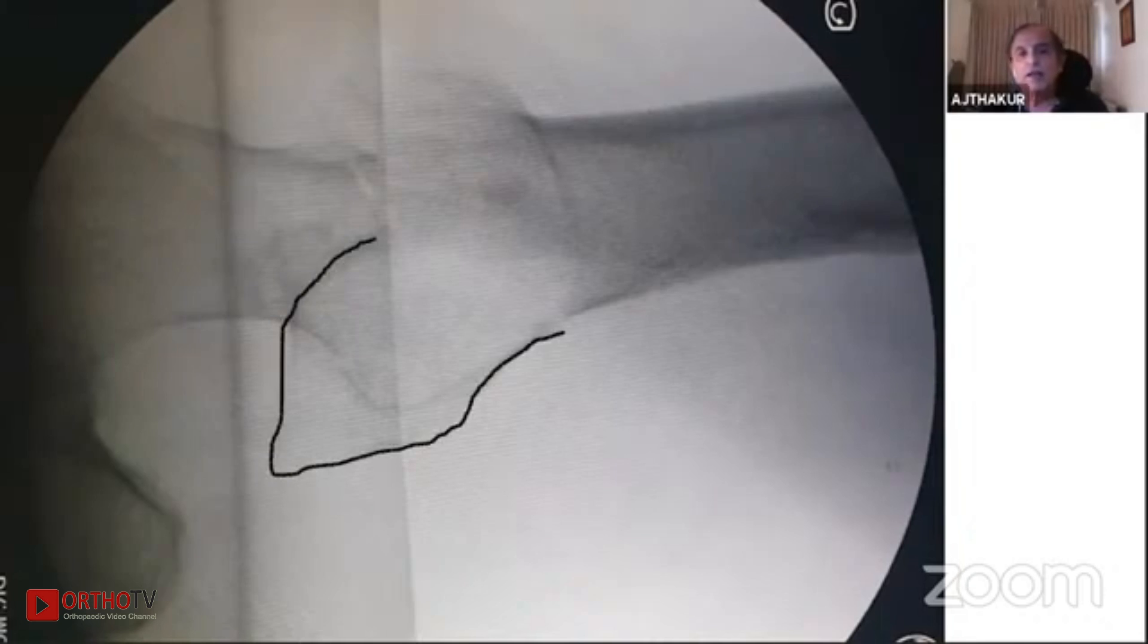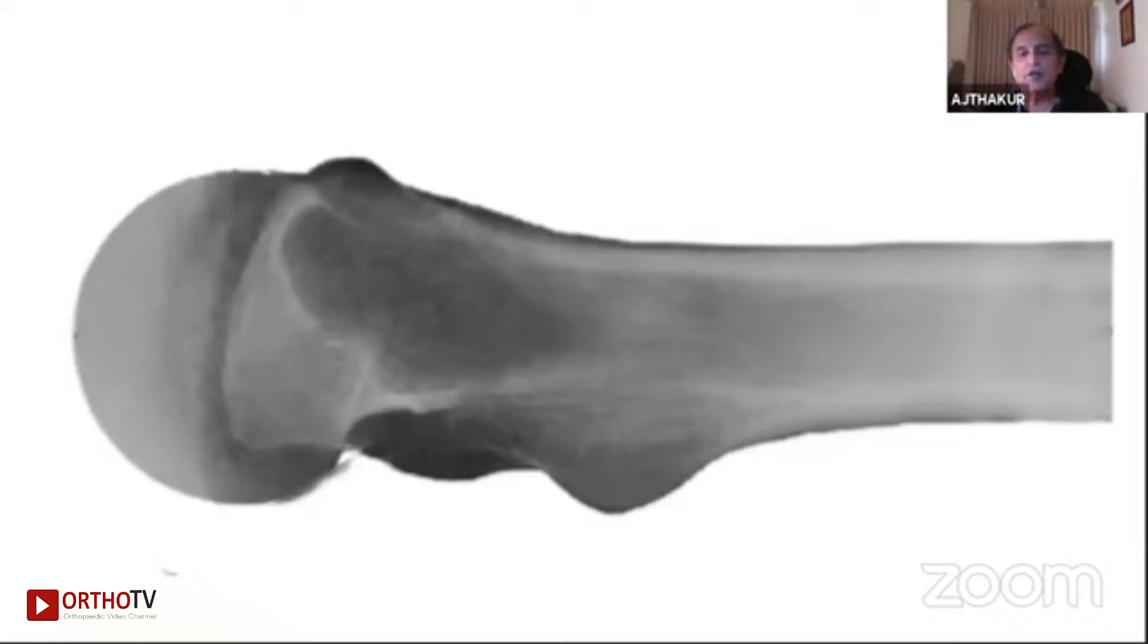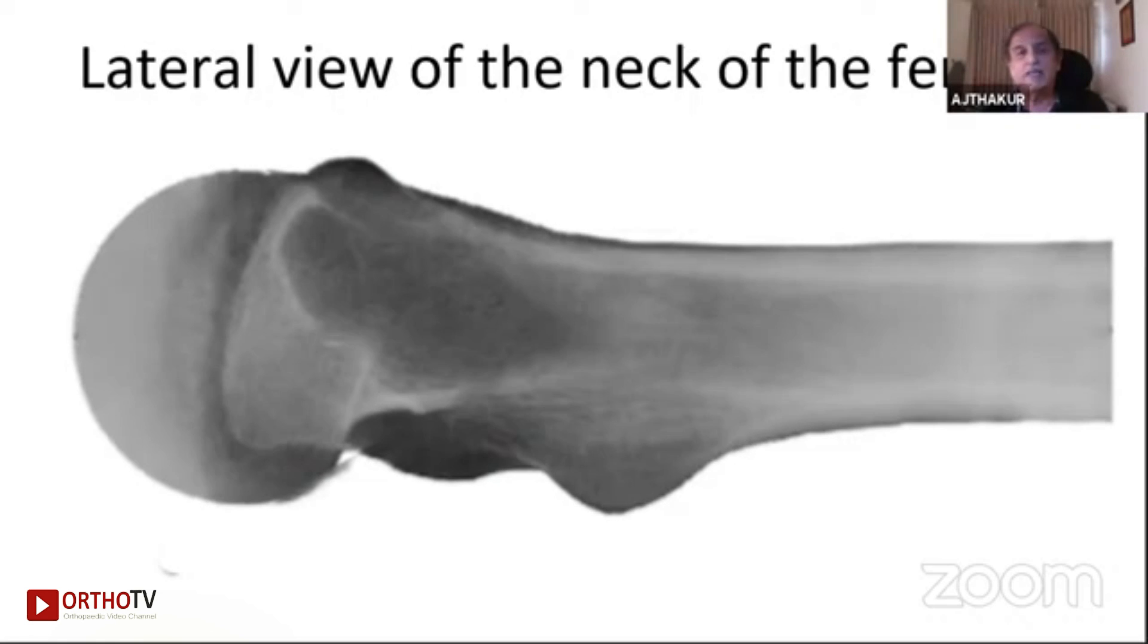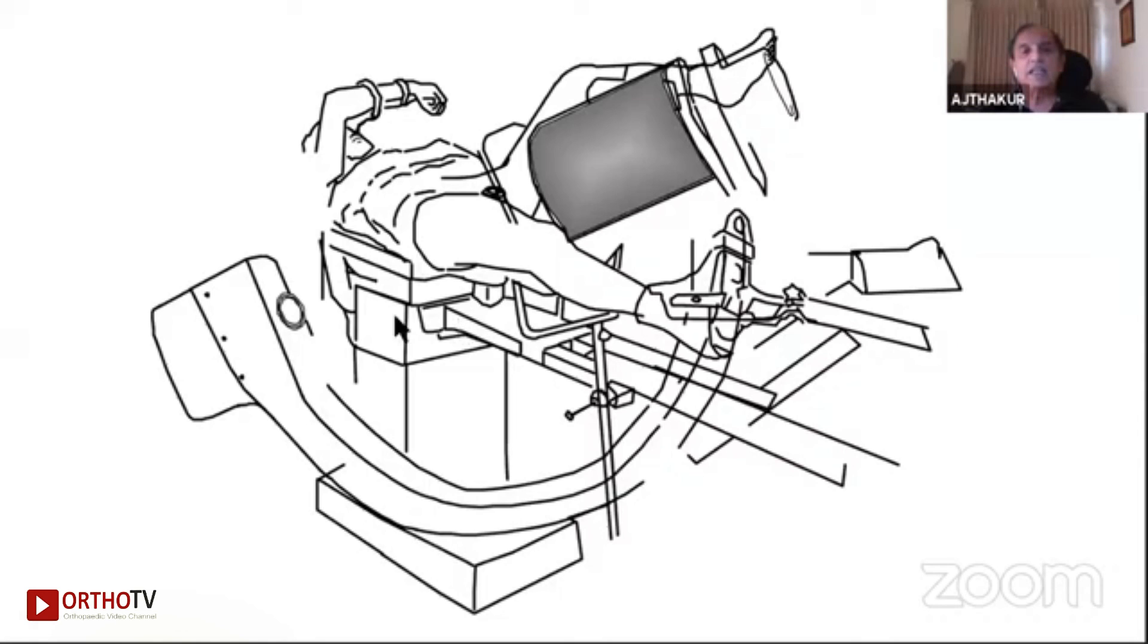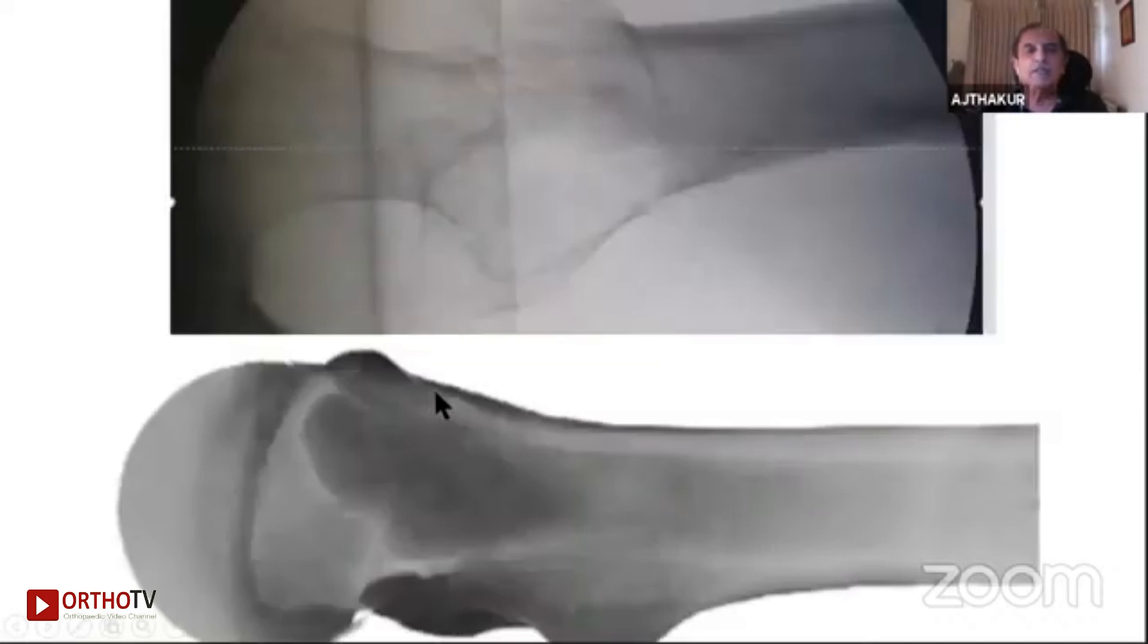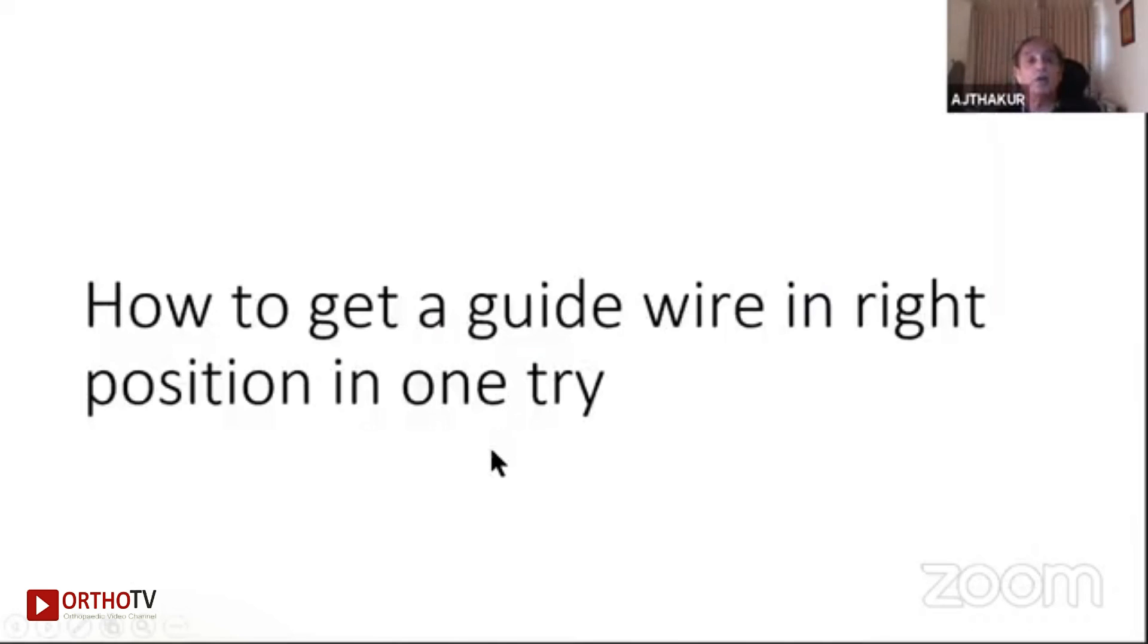The true lateral view is something that you can see on this model. The greater trochanter is superimposed on the neck of the femur. You do not see the neck length here in this picture because this is the true lateral view of the neck of the femur, not the shaft of the femur, but neck of the femur, and it is the neck of the femur that you are interested in. So this is the view that you need to obtain. Now how to do that is by tilting the image intensifier in lateral position to about 15 to 20 degrees and you will be able to get this kind of view.